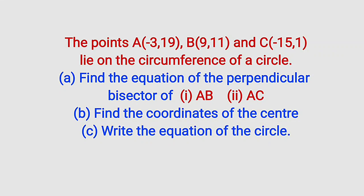Hello, good day viewers. Still on coordinate geometry, here is our problem for today, which involves an inscribed triangle on a circle. The points A, B, and C with their respective coordinates lie on the circumference of a circle. We are asked to find the equation of the perpendicular bisector of line AB and AC, find the coordinates of the center, and lastly write the equation of that circle.